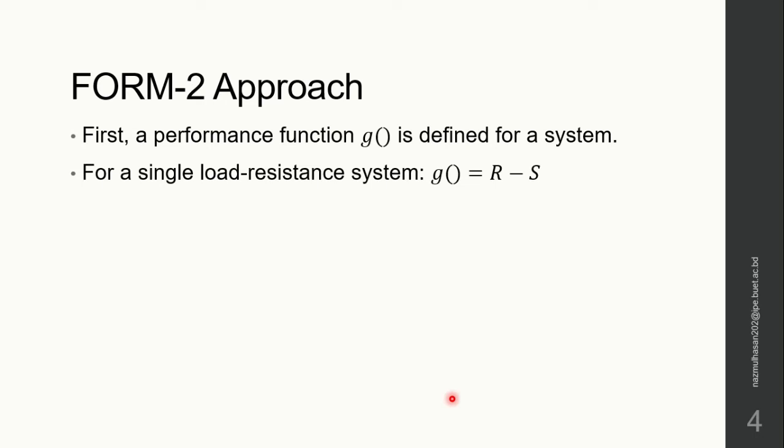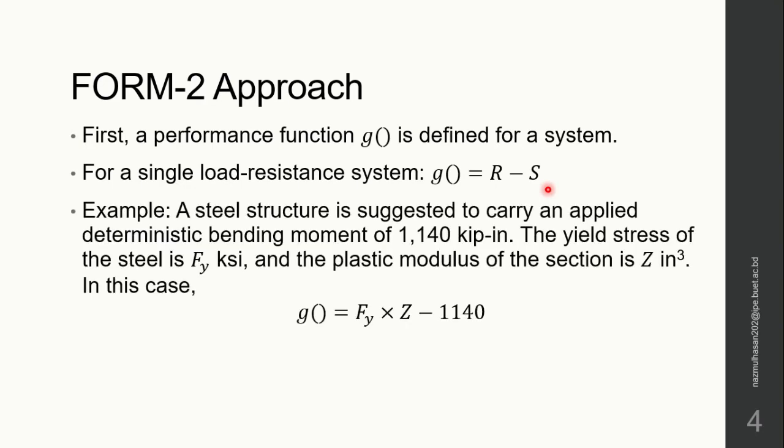For the FORM-2 approach, first we need to define a performance function g() for a system. For a single load-resistance system, the performance function can be easily defined as the difference between the resistance and the single load. Let's look at an example.